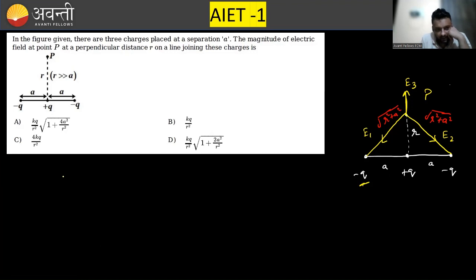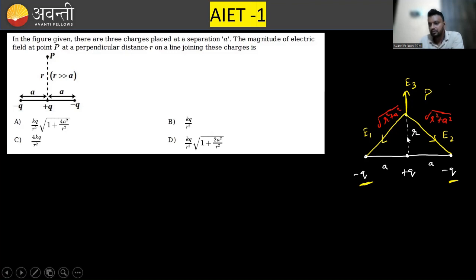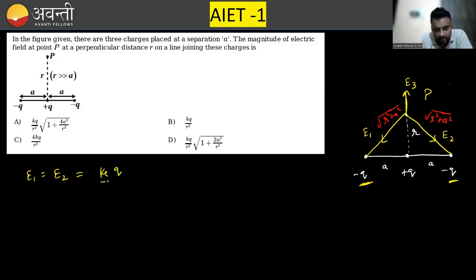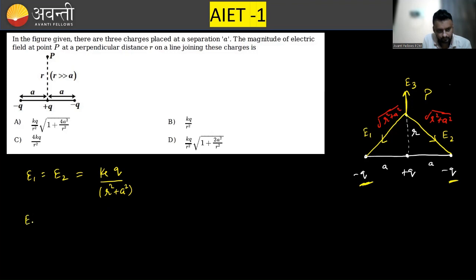Now we will write the fields. Since both minus q charges are equal and their separation to P is the same, E1 and E2 are equal in magnitude. Their magnitude is Ke × Q divided by (r² + a²). E3, due to the positive charge, is Ke × Q divided by r². These three fields need to be added as vectors.